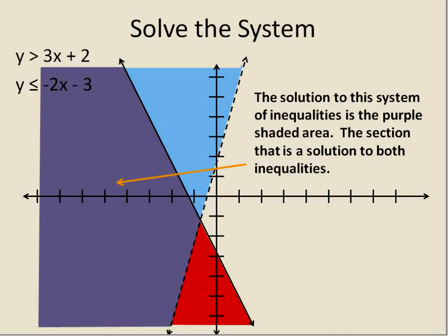This is the section that would be a solution for both inequalities. And if you'd like to test this, you could pick any point in the shaded purple area, and that would give you your x and y coordinate, like this one, for example, negative 5, 0. Plug that into both inequalities and solve, and you'd be able to check and see if that point is truly a solution for this system of linear inequalities.